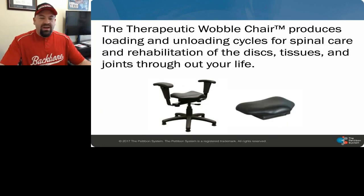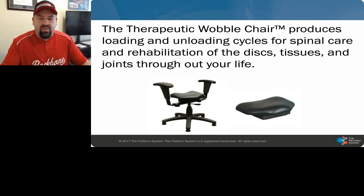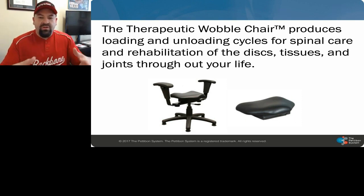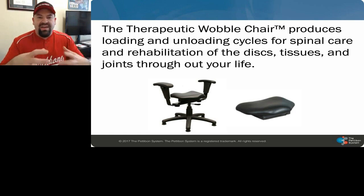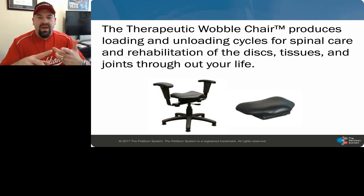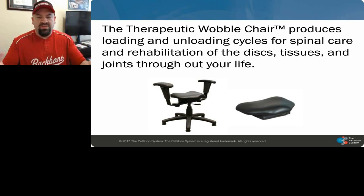So the wobble chair — if you've never been on one or sat on one, you definitely need to get to a live class to see that, get into practice, or have them try it out. What we're going to be doing is using this wobble chair to produce what we call loading and unloading cycles of the spine. When we load and unload, we're going to get certain effects on the different types of tissue, whether that's the ligaments, the muscles, the joints, the discs, and the nervous system — because we know getting the nerve system right is the primary function as chiropractors.